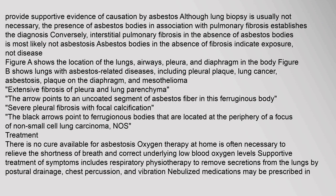Although lung biopsy is usually not necessary, the presence of asbestos bodies in association with pulmonary fibrosis establishes the diagnosis. Conversely, interstitial pulmonary fibrosis in the absence of asbestos bodies is most likely not asbestosis. Asbestos bodies in the absence of fibrosis indicate exposure, not disease. Figure A shows the location of the lungs, airways, pleura, and diaphragm in the body. Figure B shows lungs with asbestos-related diseases, including pleural plaque, lung cancer, asbestosis, plaque on the diaphragm, and mesothelioma. An arrow points to an uncoated segment of asbestos fiber in a ferruginous body, and severe pleural fibrosis with focal calcification is also depicted.